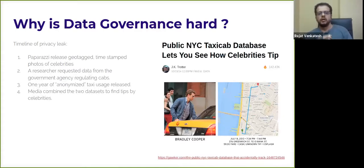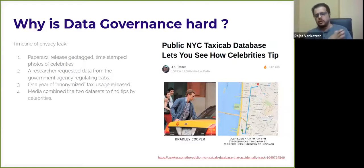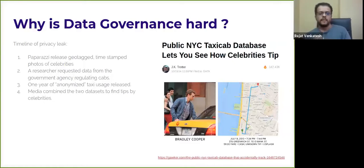A researcher got curious about the dataset and used the Freedom of Information Act — an act in the US — to get the raw data that the taxi commission of New York City had. The taxi commission anonymized the data, or thought they had anonymized the data, and released a whole year's worth of records. Researchers used this dataset for finding out all kinds of transportation details — how people get from one point to another, the popularity of taxis, and which times were most popular in New York City.